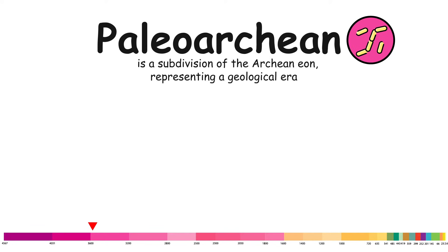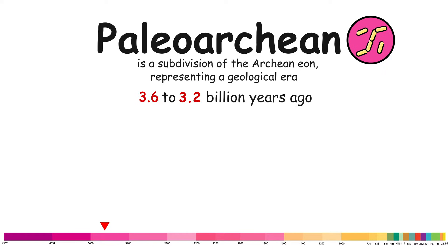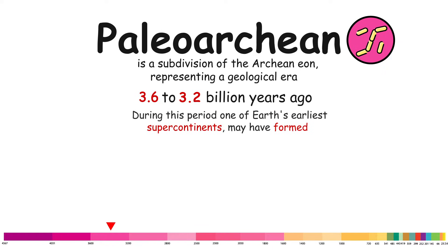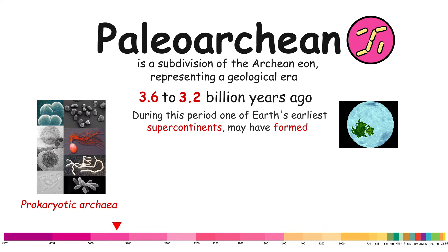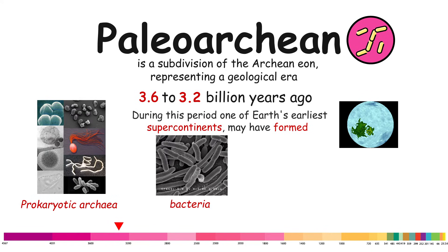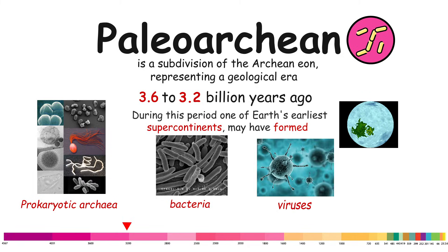Paleoarchian. The Paleoarchian is a subdivision of the Archean eon, representing a geological era that occurred approximately 3.6 to 3.2 billion years ago. During this period, one of Earth's earliest supercontinents may have formed, prokaryotic archaea and bacteria began to diversify rapidly, along with early viruses.